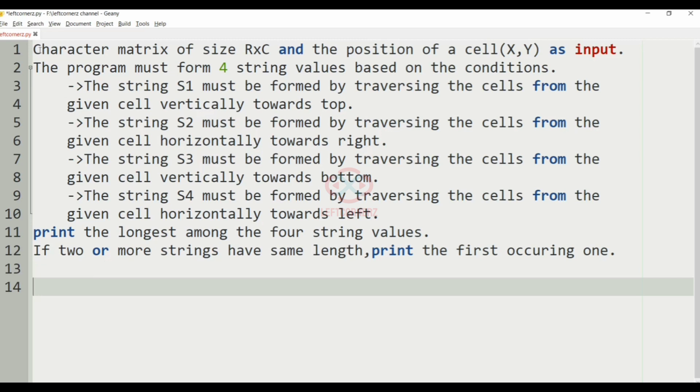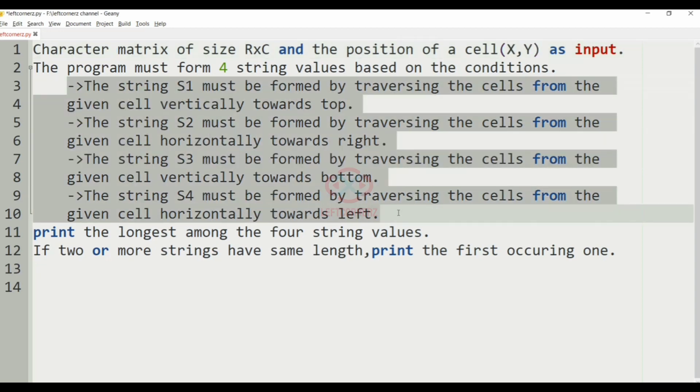First, we'll understand our question. The program must observe the character matrix of size R cross C and position of a cell X comma Y as the input, and then the program has to form four string values based on the conditions. So these are the conditions.